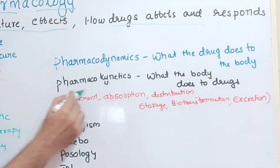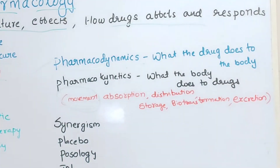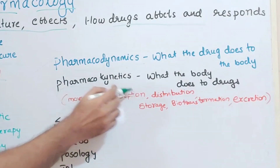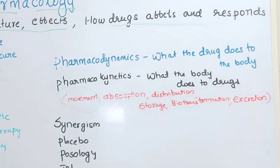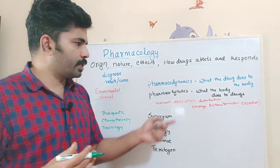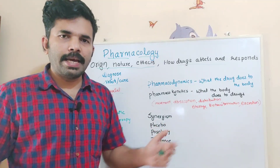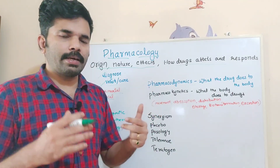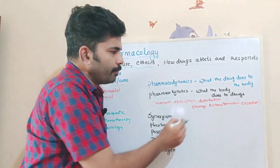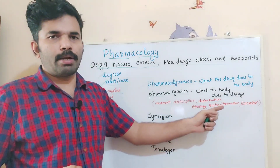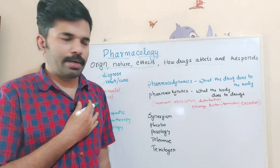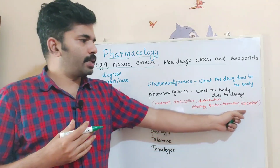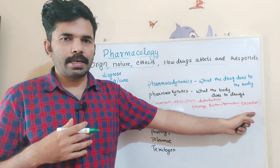This describes the movement of a drug as it moves through our body. Absorption — the drug enters the blood. Distribution — it spreads throughout the body, including the brain. Biotransformation, also called metabolism, mainly happens in the liver. Excretion is how the drug leaves the body. The main steps of pharmacokinetics are: Absorption, Distribution, Metabolism, Excretion.